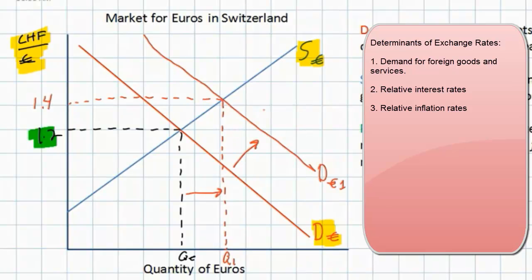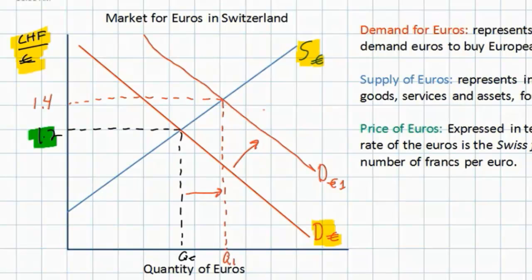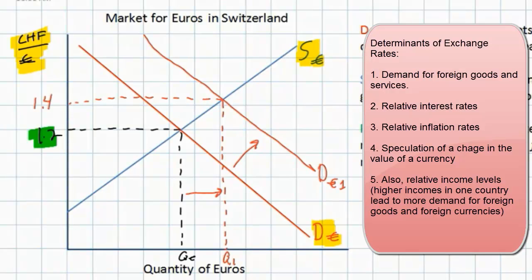What if inflation in Switzerland were higher than it was in neighboring European countries? If the price level of goods and services in Switzerland were to rise whereas those in other European countries remain steady, Swiss households would be expected to demand more European goods since they appear relatively cheaper. Therefore, higher inflation rates in Switzerland can cause demand for euros to increase. Additionally, if there were speculation among Swiss investors that the value of the euro was going to increase, there would logically be an increase in demand for euros, which would ultimately cause the euro to appreciate against the Swiss franc.